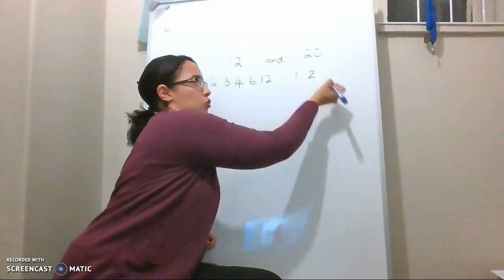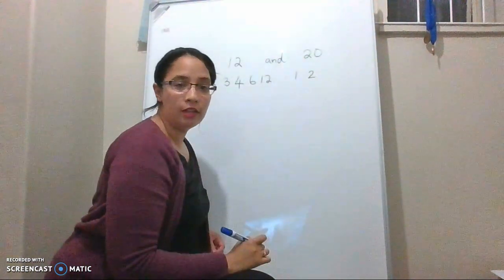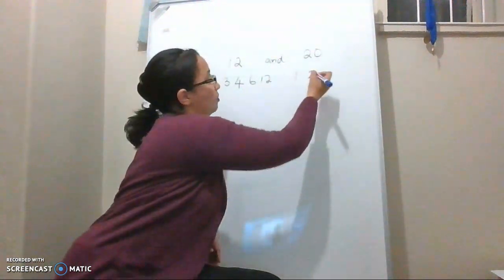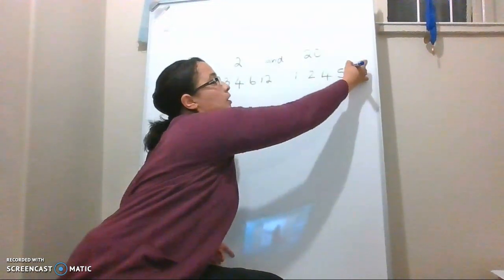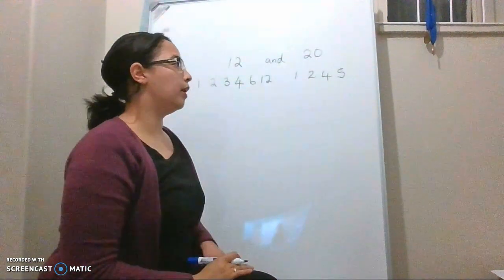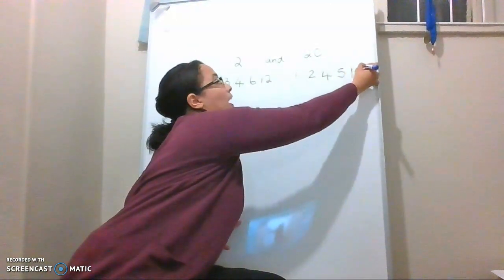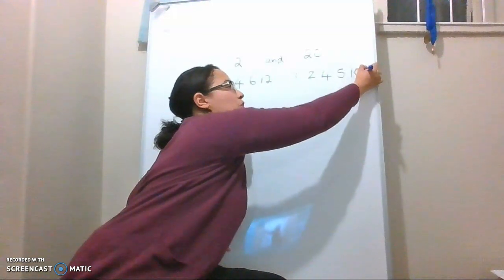It's 1, it's 2. Can 3 divide into 20 without a remainder? No. 4, 5, and then 20 divided by 2 is 10, and 20 divided by 1 is 20.